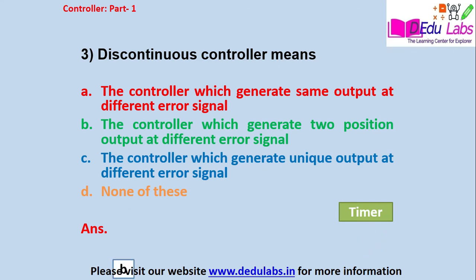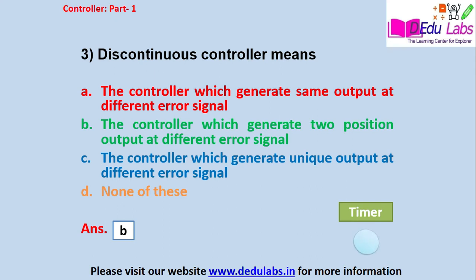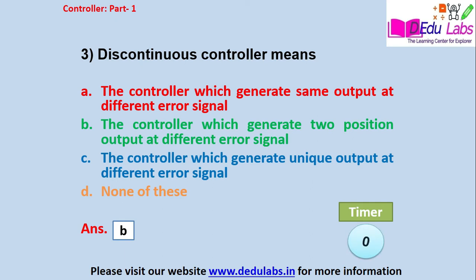The answer is Option B — the controller which generates two position output at different error signals. Continuous type controllers are classified into different categories like on-off controller, on-off controller with neutral zone, multi-position controller, and multi-position with neutral zone. But here there is no multi-position controller — only two position outputs are available. So the answer is Option B: the controller generates two position output at different error signals.